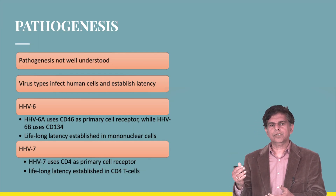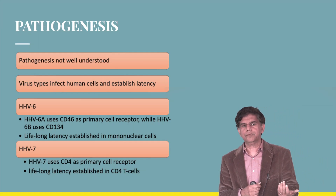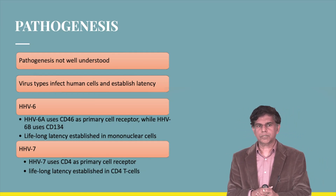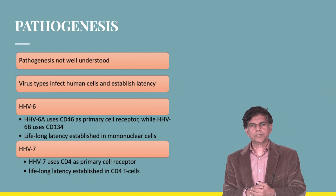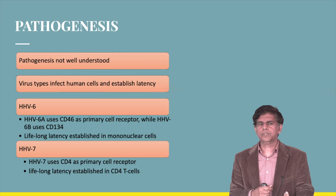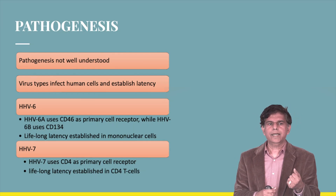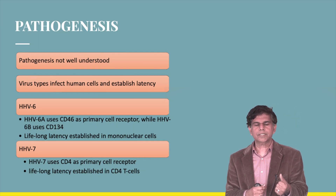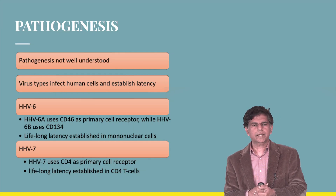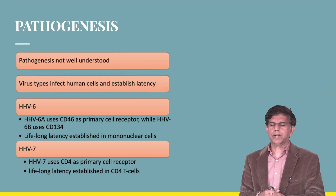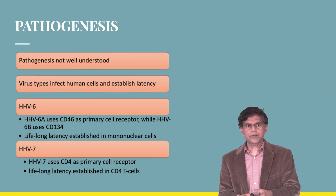HHV-7 uses CD4 as a primary cell receptor, also establishing lifelong latency. To recap: HHV-6A and 6B use CD46 and CD134 respectively, while HHV-7 uses CD4 as a primary cell receptor.